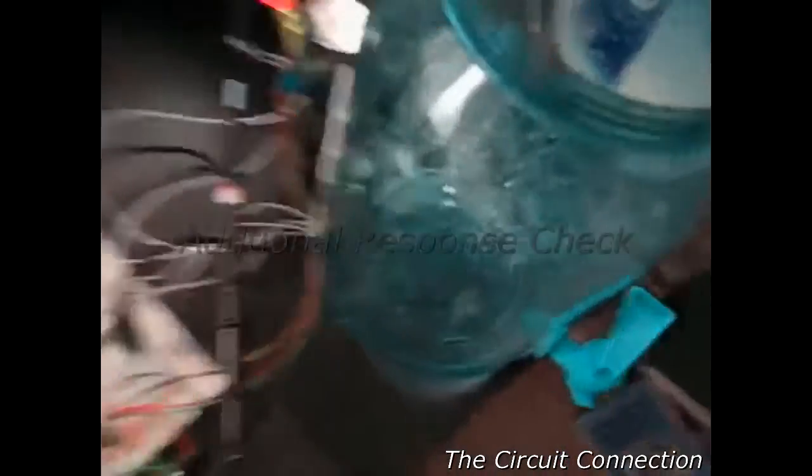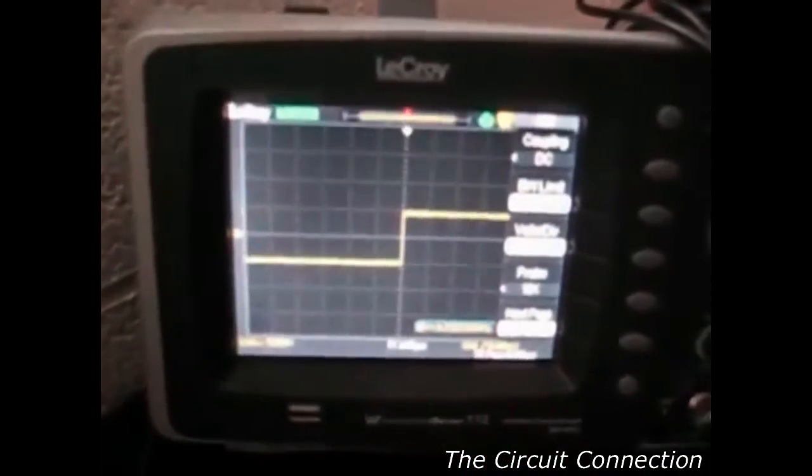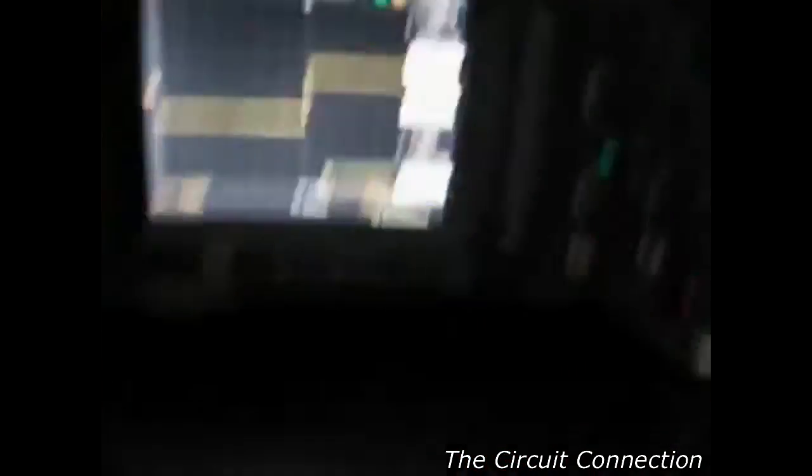If I rock this back and forth, because we're on the margin there. If I rock it back and forth, we should see this turn on and off. Which we do. And, we'll see how it is there. See how it is here. And, we'll see how it is here.